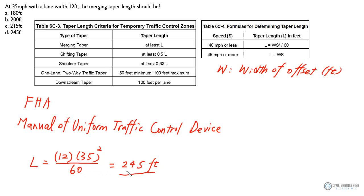So our L is going to be 245 feet. So for a merging taper, we should use at least L for taper length. So the taper length for this merging taper is going to be 245 feet. The answer is going to be B.